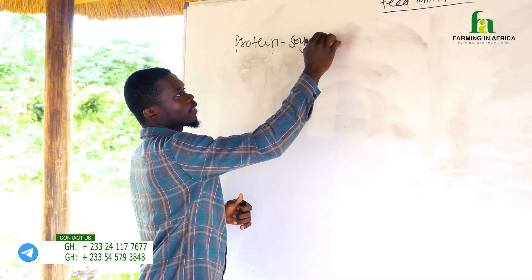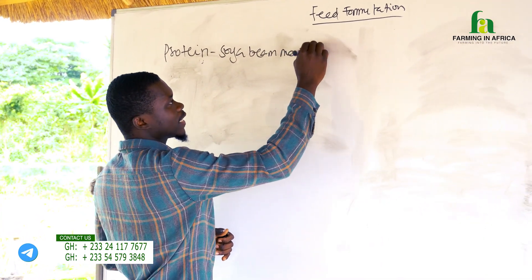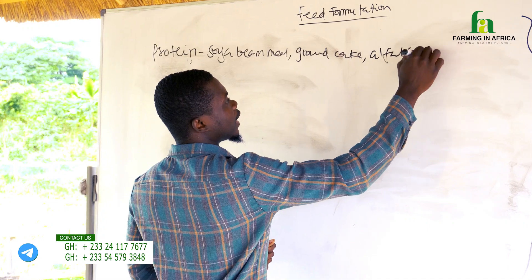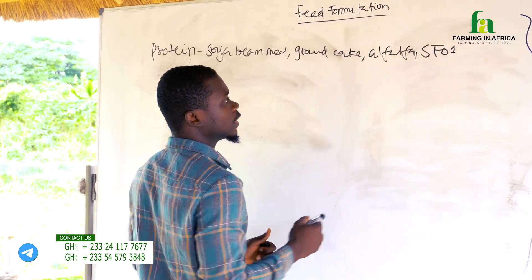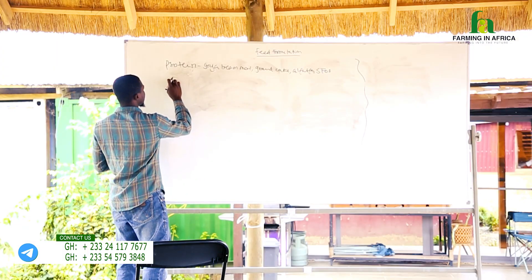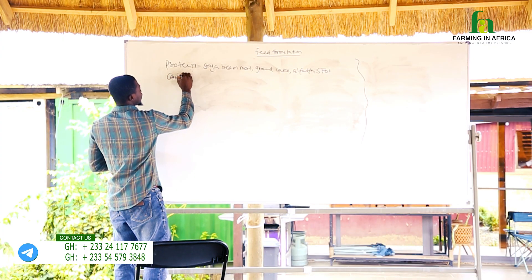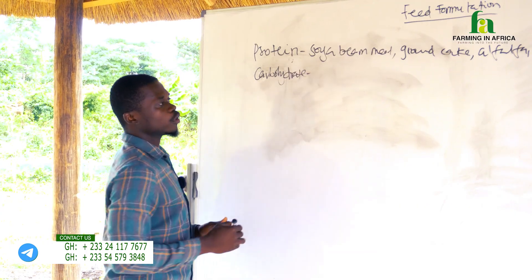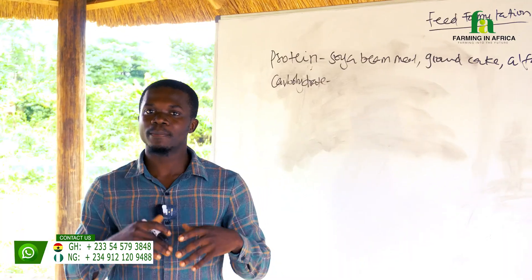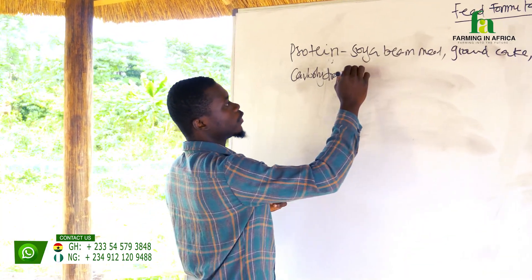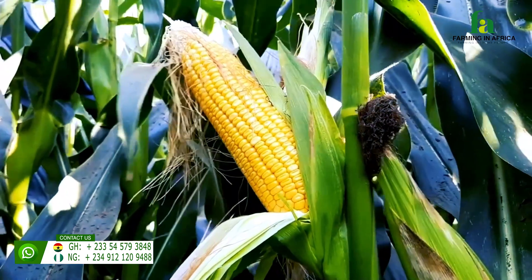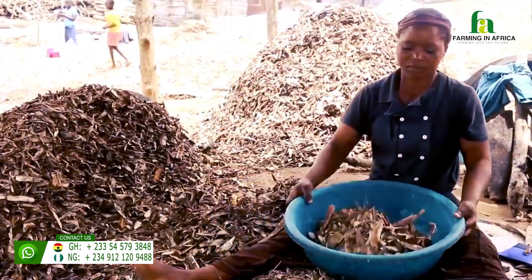Protein sources include soybean meal, groundnut cake, grasses like alfalfa, sugar grass, and the Brachiaria SF01. Moving on to carbohydrates — carbohydrates provide energy. For animals like males that don't need as much protein, you need energy. You get energy from wheat bran, rice bran, maize meal, and cassava peels — all of these are your carbohydrate sources.